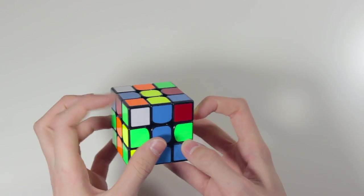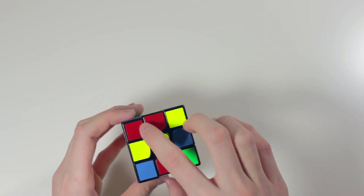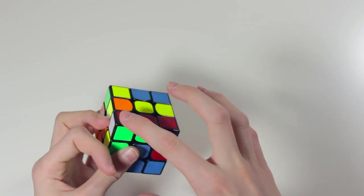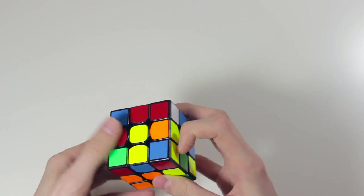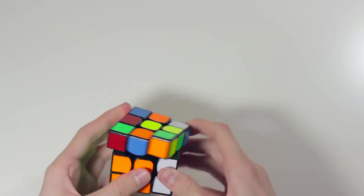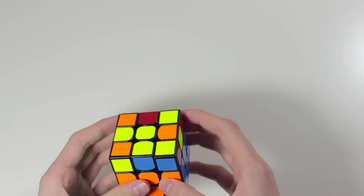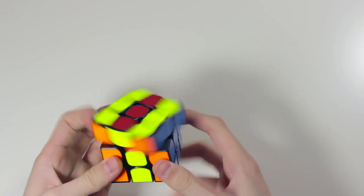So then I would do this pair first. And then I'd do these two. Which sets this up. And then I'd insert that in the back. And then I'd probably do something like that. And then I'd do OLLCP for this case. And a Z-perm.